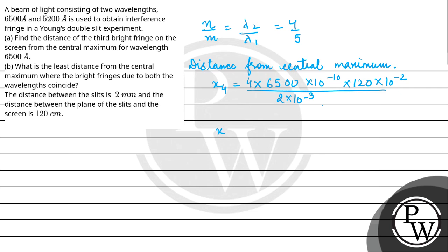So x4 will be 4 × 10^-5 or 0.156 × 10^-2, or simply we can say 0.16 cm. This is the distance from central maxima.